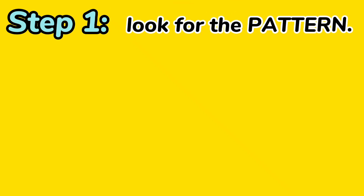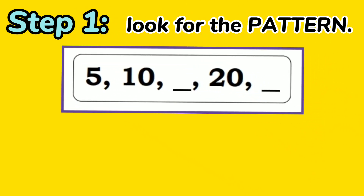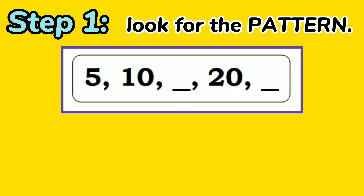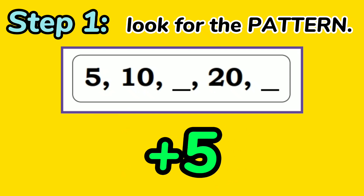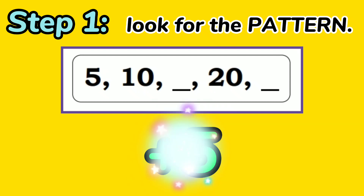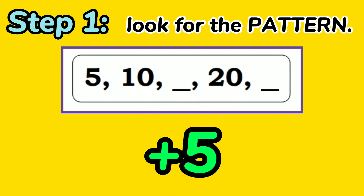For Step 1, look for the pattern. In the given number sequence — 5, 10, blank, 20, and blank — each term is formed by adding 5 to the preceding number. So the pattern of the given number sequence is plus 5.